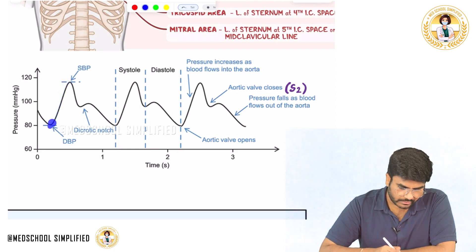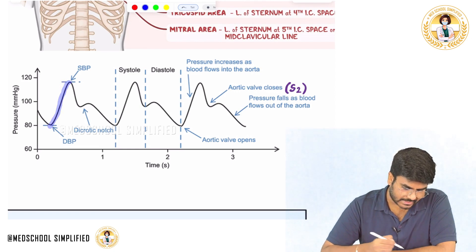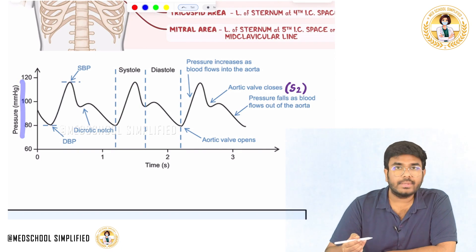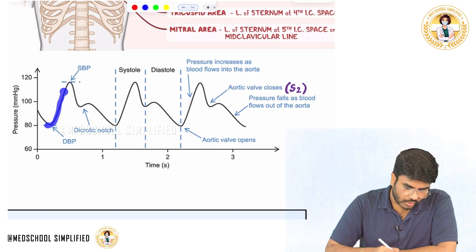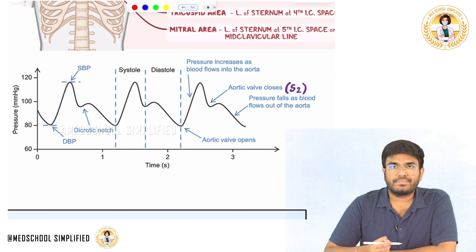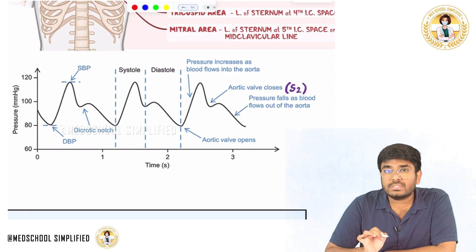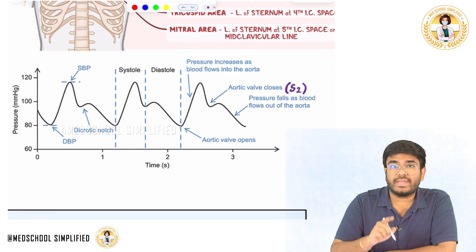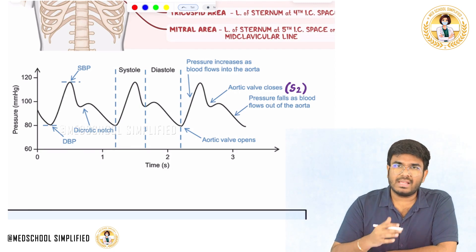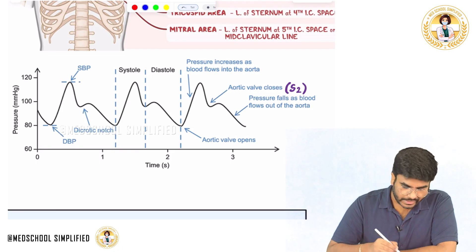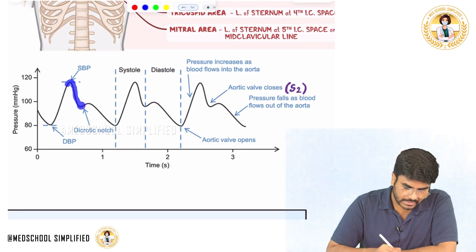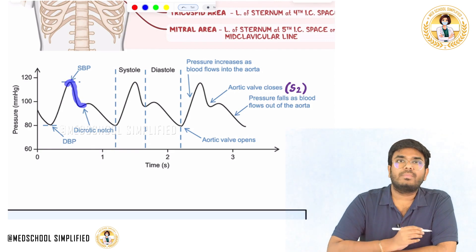During systole, your blood pressure increases. Here I'm talking about the pressure on the y-axis and the time on the x-axis. During systole, pressure increases. And during the slow ejection phase, the pressure decreases.